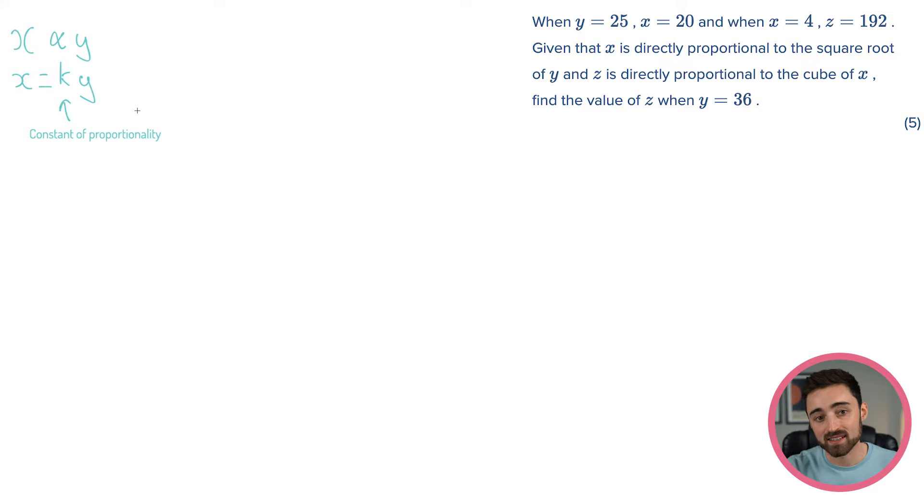So in our case, x isn't directly proportional to y. x is directly proportional to the square root of y. In other words, x is k, that's the directly proportional to bit, but instead of y, square root of y. Fantastic. So that's one equation that I've cashed in. Let's carry on.